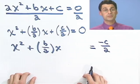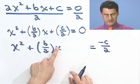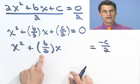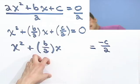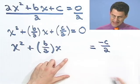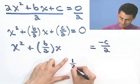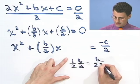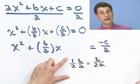What's the next step in completing the square? What I do is take a look at the coefficient in front of the x, which in this case is b over a, and I take half of it. So I take half of b over a. That equals b over 2a. And then I square that.